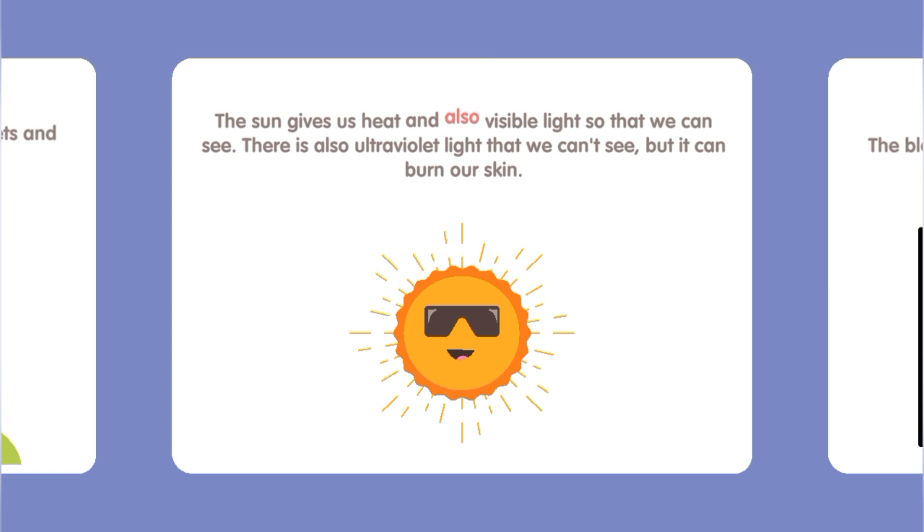The Sun gives us heat and also visible light so that we can see. There is also ultraviolet light that we can't see, but it can burn our skin.